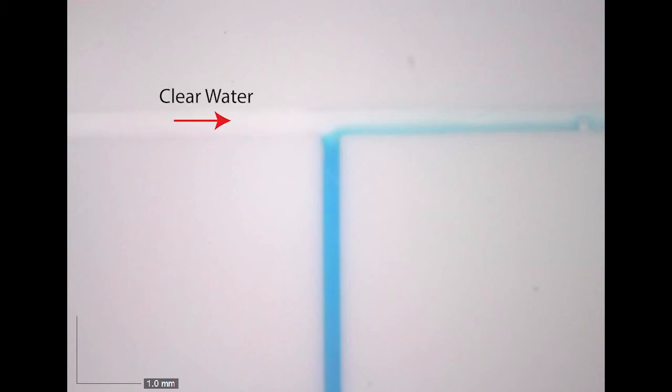Clear water flows in from the left-hand side of the chip while blue dyed water enters from the bottom, forming an interface at the intersection of the two channels.